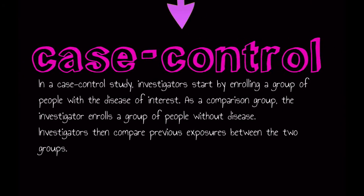Case control studies begin at the end. Investigators start by enrolling a group of people with the disease of interest. As a comparison group, the investigator enrolls a group of people without disease. Investigators can then compare previous exposures between the two groups. Here, the investigator is looking back in time to see if people were exposed to the factor they are interested in.